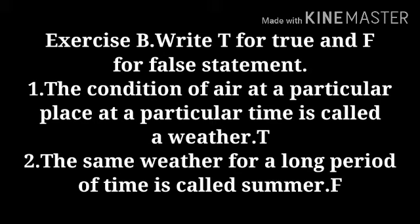Exercise B: write T for true and F for false statement. Number 1: the condition of air at a particular place at a particular time is called weather. It is true. Number 2: the same weather for a long period of time is called summer. It is false.